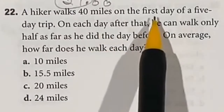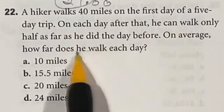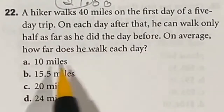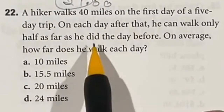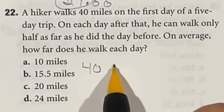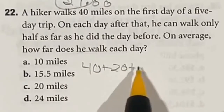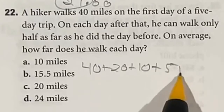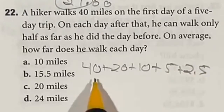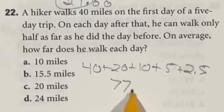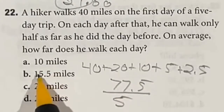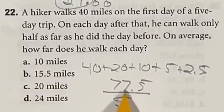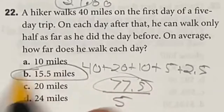For question 22, a hiker walks 40 miles on the first day and then half of that every day after for 5 days. On average, how many miles did he walk each day? Let's first find his total mileage and then divide by 5. First day is 40, second day is 20, then 10, then 5, then 2.5. Adding all that up gives 77.5. Dividing by 5: it has to be larger than 10 because that would be 50, and smaller than 20 because that would be 100. It's right in the middle, so this is 15.5.